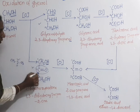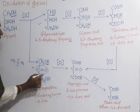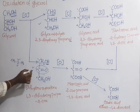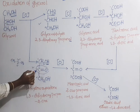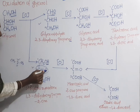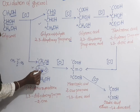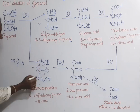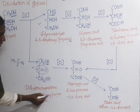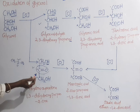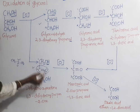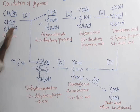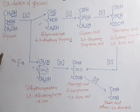In dihydroxyacetone, a keto (carbonyl) group is formed at the second carbon: the alcohol CHOH is oxidized to C=O (keto group), and CH2OH is at the third carbon. It is called 1,3-dihydroxypropan-2-one — 'propane' because there are 3 carbon atoms, and '2-one' because it is a ketone. These are the 2 products obtained by the oxidation of glycerol.